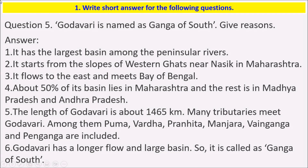The fifth question: Godavari is named as the Ganga of the South — give reasons. It has the largest basin among the Peninsular rivers. It starts from the slopes of the Western Ghats near Nasik in Maharashtra. It flows to the east and meets the Bay of Bengal. About 50 percent of its basin lies in Maharashtra and the rest is in Madhya Pradesh and Andhra Pradesh. The length of Godavari is about 1,465 kilometers.